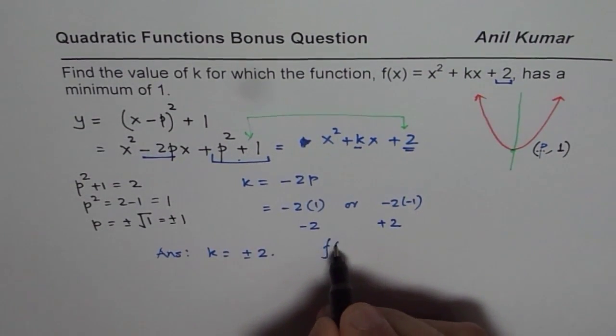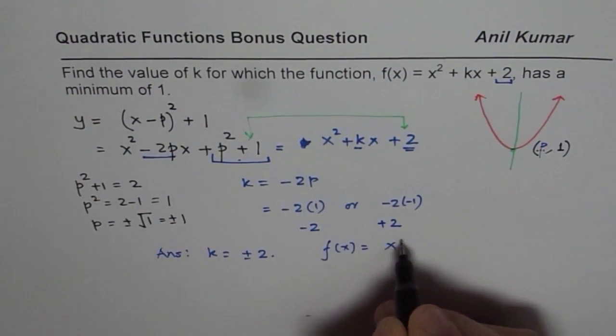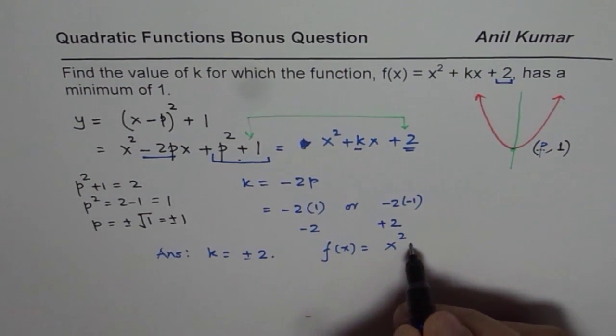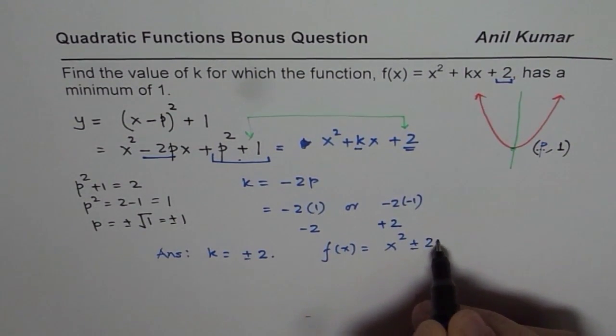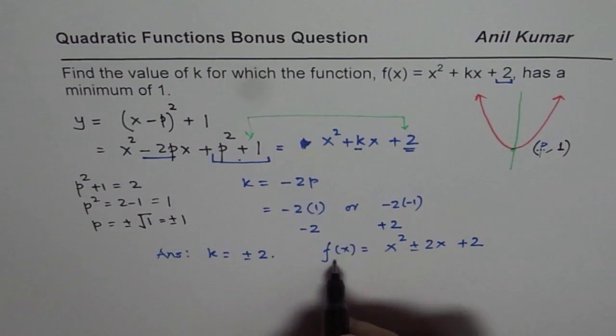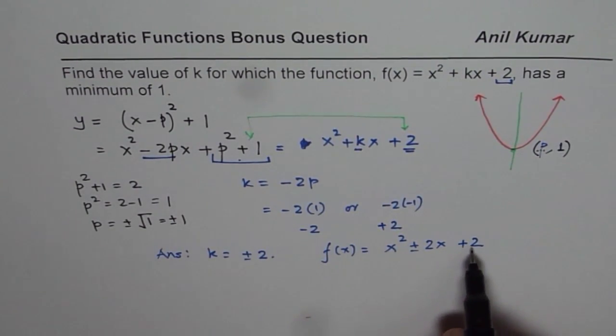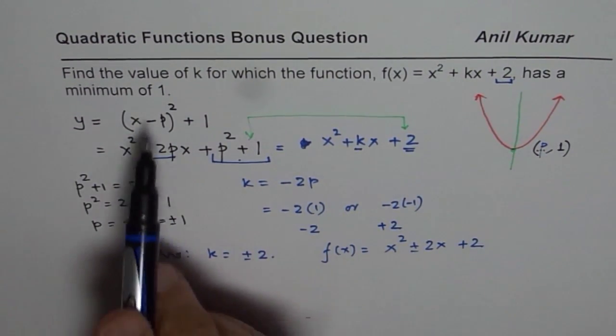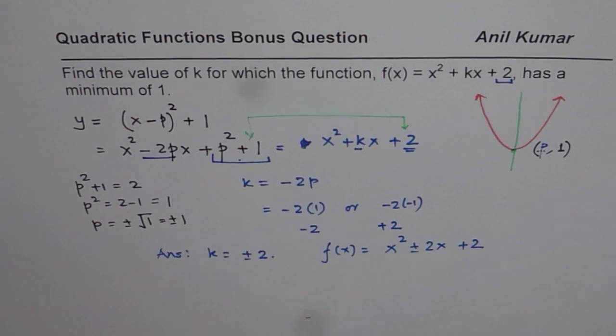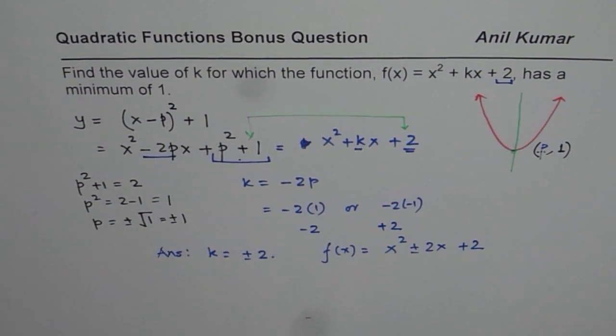And therefore, our equation will be f(x) equals x squared, it could be plus or minus 2x plus 2. This particular function will have a minimum value of 1. Do you get the idea? That is how the question should be solved. I hope that helps. Thank you and all the best.